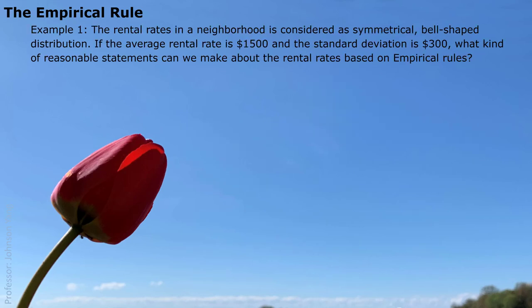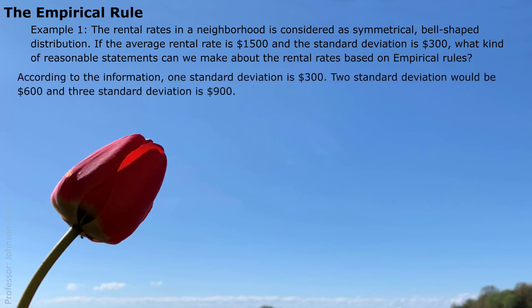Here is an example. The rental rates in a neighborhood are considered to follow a symmetrical bell-shaped distribution. The average rental rate is $1,500 and the standard deviation is $300. Based on the Empirical Rule, we calculate: 1 standard deviation is $300, 2 standard deviations is $600, and 3 standard deviations is $900. Using these, we find intervals from the center and can make the following statements.